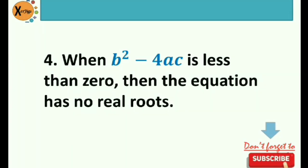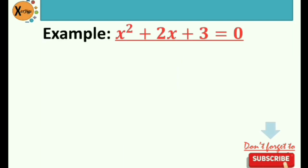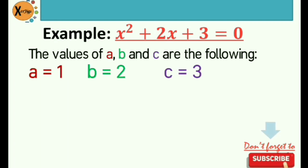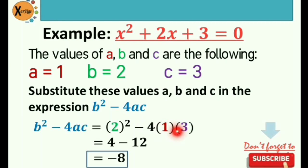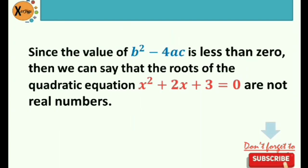Number 4: when b squared minus 4ac is less than 0, then the equation has no real roots. Example: x squared plus 2x plus 3 equals 0. Identify a, b, and c: a is positive 1, b is positive 2, c is positive 3. Substitute into b squared minus 4ac: 2 squared minus 4 times 1 times 3. 2 squared is 4, negative 4 times 1 is negative 4, times 3 is negative 12. So 4 minus 12 is negative 8. Since the discriminant is less than 0, the roots are not real numbers.